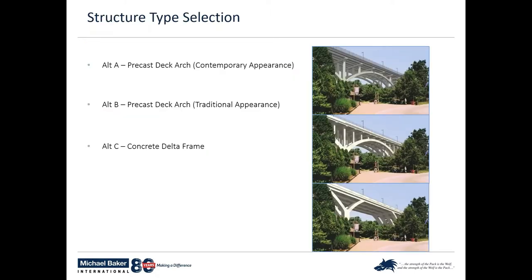As part of the structure type process — which was in Michael Baker International's scope of work for structure type selection, preliminary design, and final design — the finalists were a contemporary precast deck arch, traditional precast deck arch, or concrete delta frame.